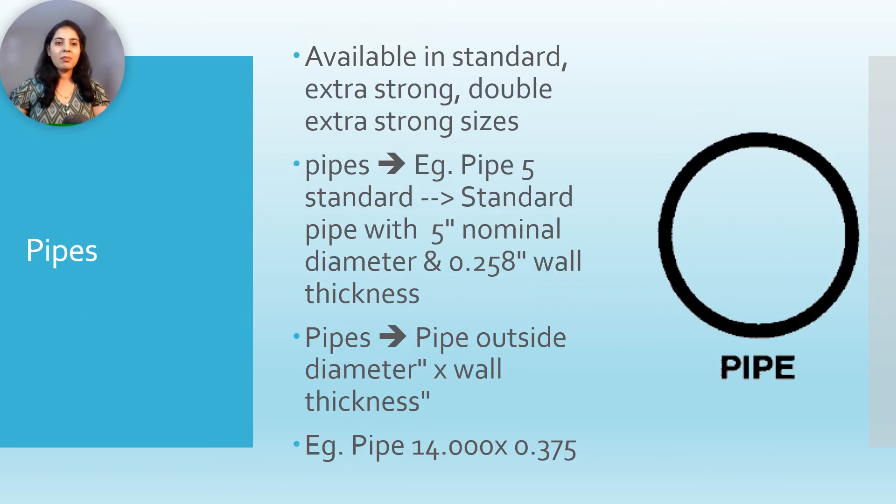Now we will see the shapes, pipes. These are available in standard, extra strong, double extra strong. Pipes up to and including NPS 12, that is nominal pipe size 12 inches, are called pipes. For example, pipe 5 standard means pipe with 5 inch nominal diameter and 0.258 inch wall thickness. And pipes with wall thickness that do not correspond to foregoing wall thicknesses are designated as pipe outside diameter in inches by wall thickness in inches. For example, pipe 14 inch diameter and 0.375 inch thickness.